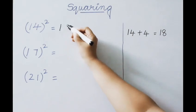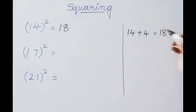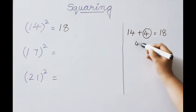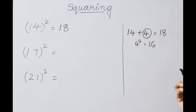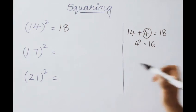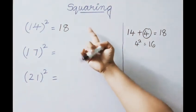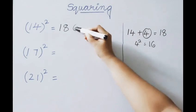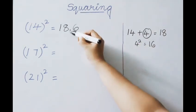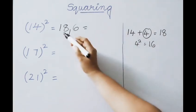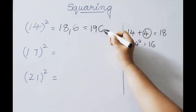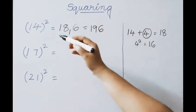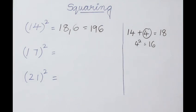That 18 is our first part answer. Now we take the square of the excess value: 4 squared is 16. Since the base is 10, only 1 digit is allowed. Write down 6 and carry 1. So our answer: 8 plus 1 is 9, and the last digit is 6. Therefore, 14 squared is 196.